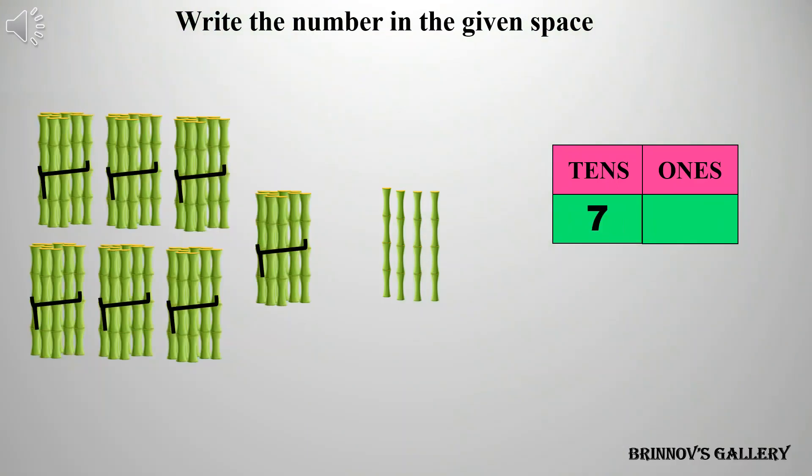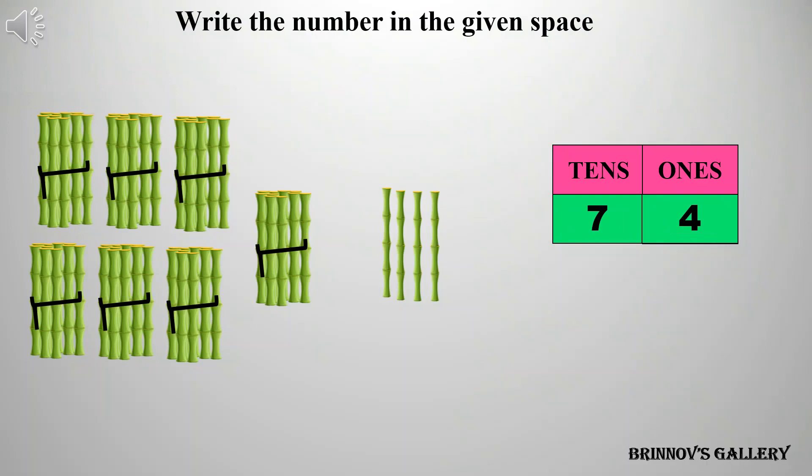Seven tens, four ones — the number is 74.